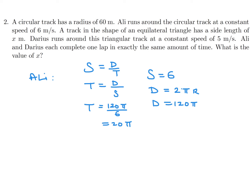For Darius, time equals distance over speed. His track is an equilateral triangle with side length x, so the total distance is 3x. His speed is 5.